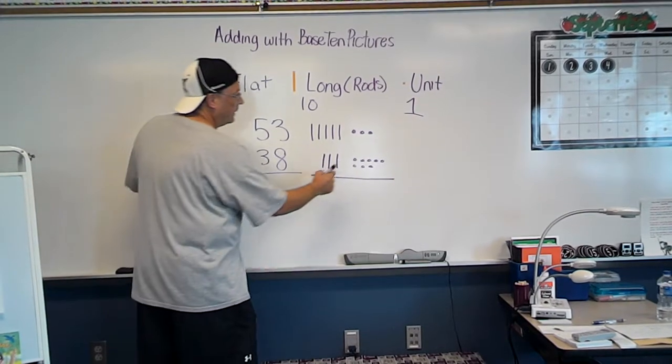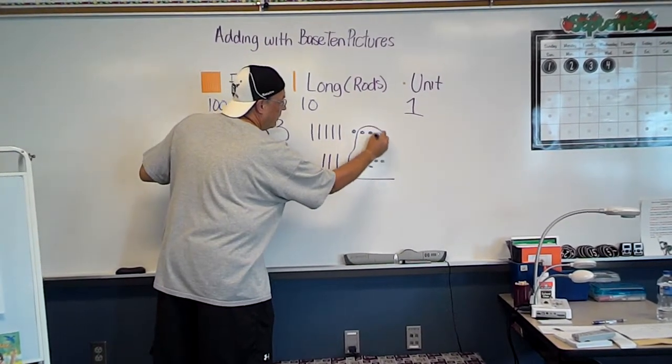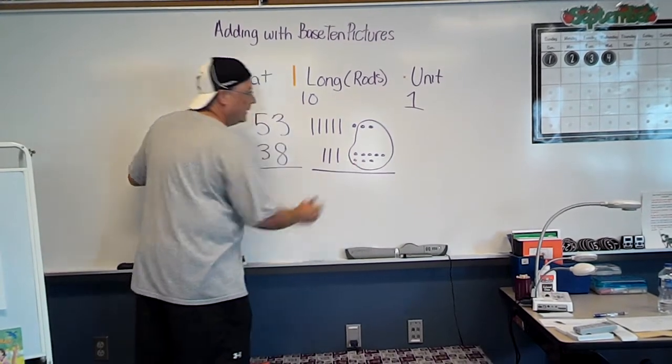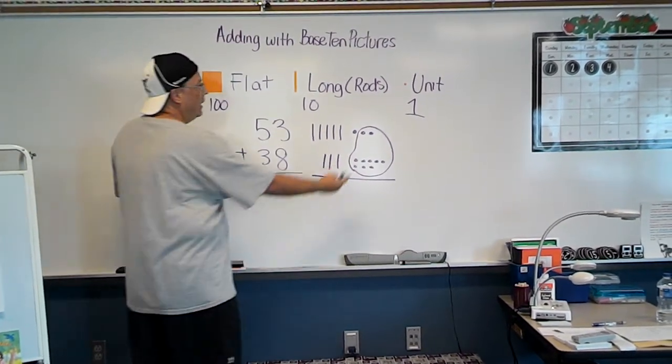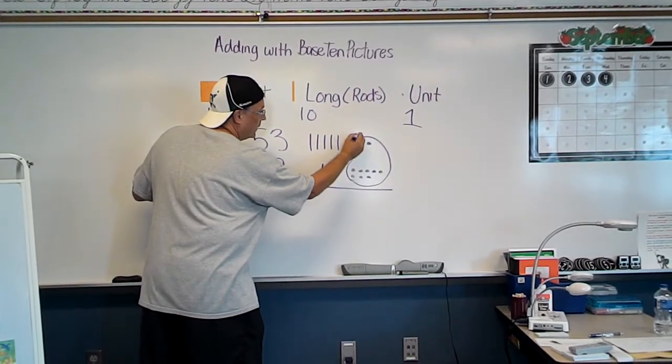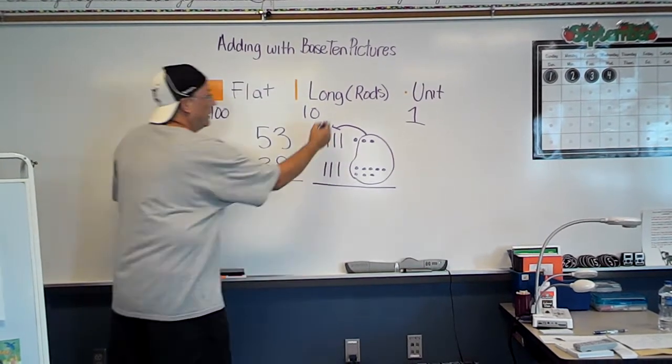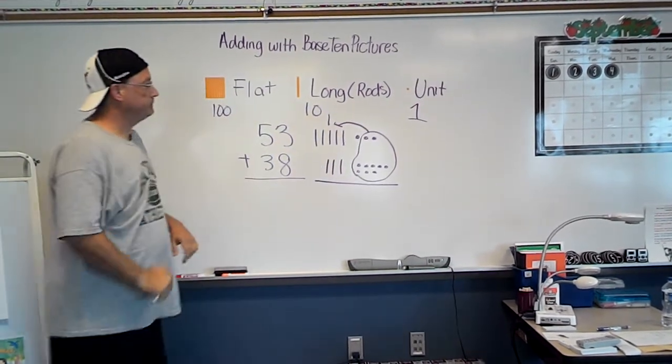We can do some regrouping. So we can take these 8s and group it with those 2. And now we have 10 ones. And we know from before that that makes a long. So we're going to do this. We're going to draw a little arrow, and we're going to add a long right there.